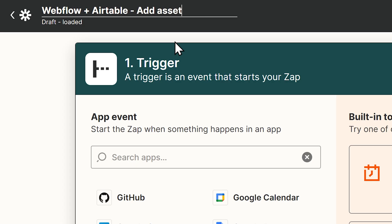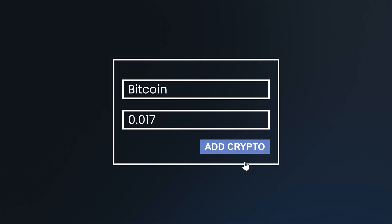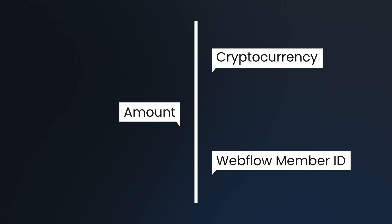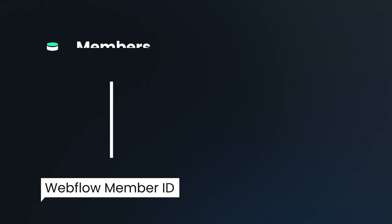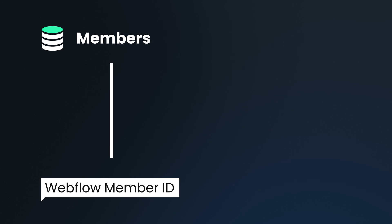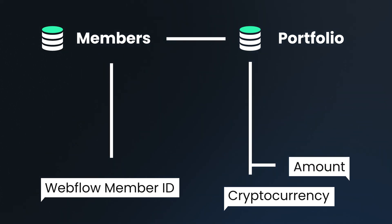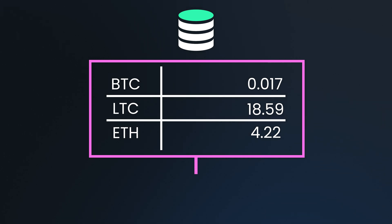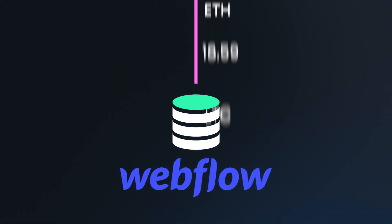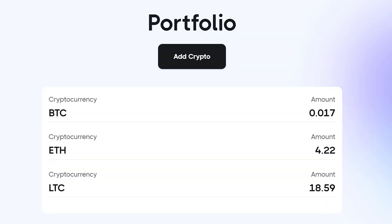Let's head back over to Zapier to wire this thing up. We're going to create a new Zap — let's call it Add Assets. Here's an overview of what's about to go down: when a form in Webflow is submitted, we want to grab the data from that form — it will contain a cryptocurrency, an amount, and a Webflow Member ID. We'll use that ID to look up the user in Airtable in the Members table. We'll then create a new record with the portfolio information from the form, roll up all portfolio records for that user, and use that to update the member item in the Webflow CMS collection so we can display all updated information on the website. This is going to be a big one — a little more technical, but even if you're not a programmer, I'm confident you can still work it out.